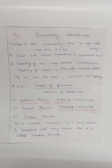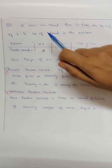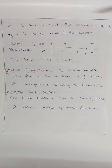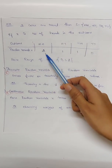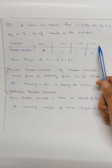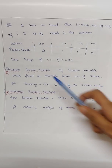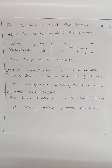In a random experiment, if a real variable is associated with every outcome, it is called a random variable. For example, two coins are tossed — the total possible outcomes are HH, HT, TH, and TT. Denoting the random variable X as the number of heads: HH gives 2, HT gives 1, TH gives 1, and TT gives 0. So the range of X is {0, 1, 2}.